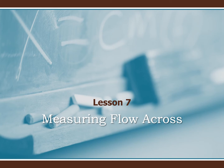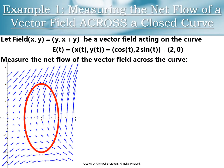Hi guys, thanks for tuning in. In this video I'm going to talk about how to use integrals to measure flow across. I'm going to start by computing an example. I've got a vector field y comma x plus y, and I have an ellipse parameterized as cosine comma two sine plus two comma zero — an ellipse centered at two comma zero. I want to measure the net flow of the vector field across this closed curve.